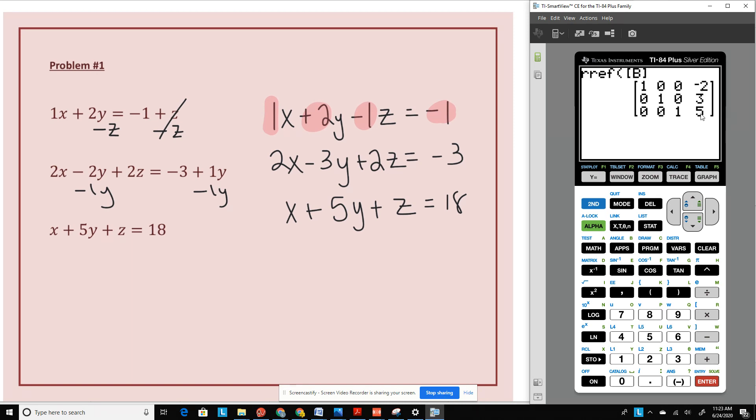And if it has one unique solution, these numbers here are your solution. Your first variable is negative 2. This is 3. And the third one is 5. So your answers are going to be negative 2, 3, and 5. It might also ask you just for one specifically. So x equals negative 2, y equals 3, and z equals 5.